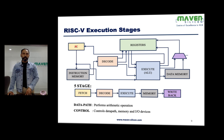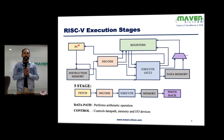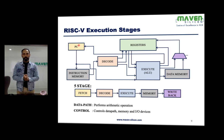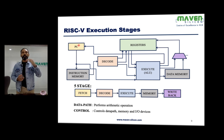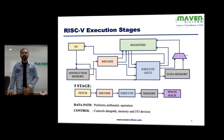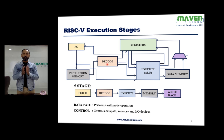The processor has a special register called the program counter. The program counter will always increment by four — PC = PC + 4 — because in RISC-V we do byte addressing, so it increments like 0, 4, 8, 12. That's how the processor fetches instructions from memory. Then the decoder decodes the instruction: what type it is and what the instruction has to do — the operation.